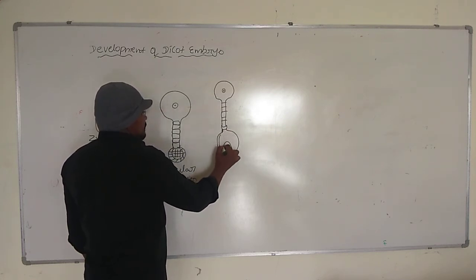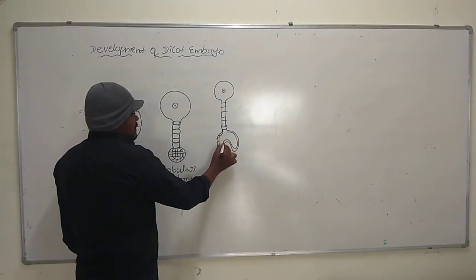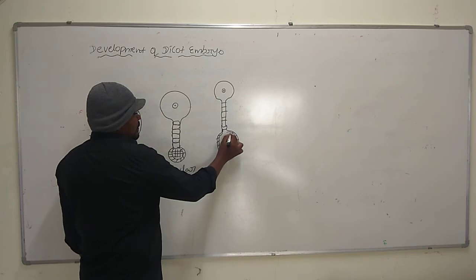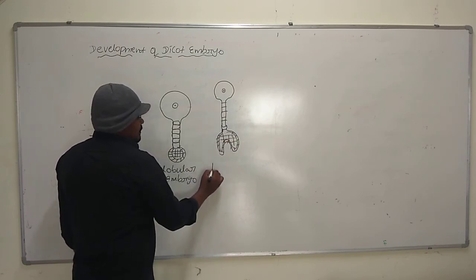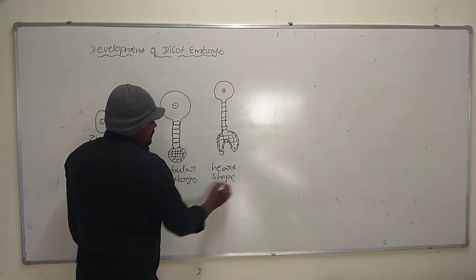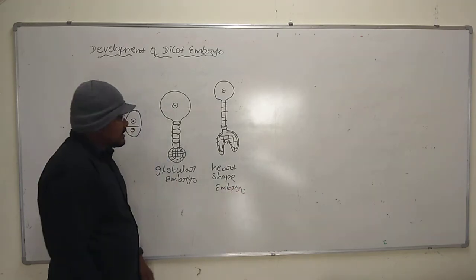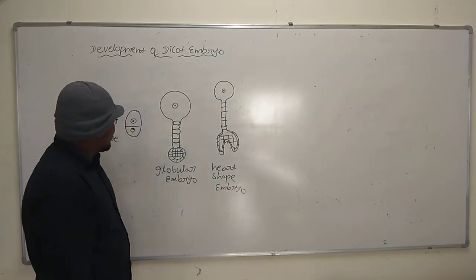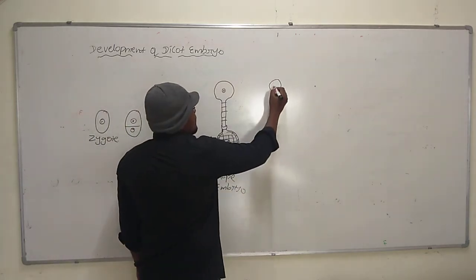This is the heart-shaped embryo. Then the heart-shaped embryo is becoming mature. This is the mature embryo.